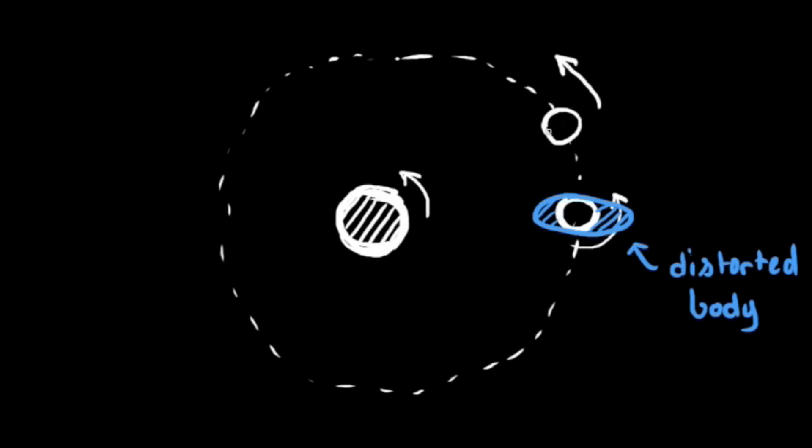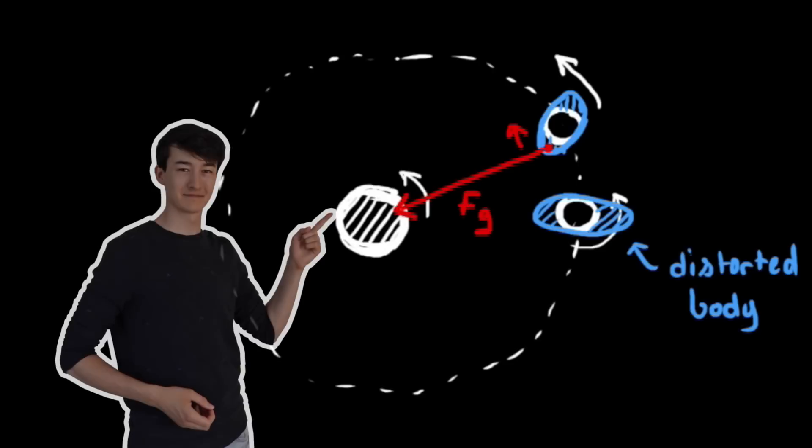And as it orbits the planet, it turns about its axis. And as it does, this distortion, or bulge, moves on. And then the planet will pull on this bulge, pulling it in the opposite direction of the spin, which slows its spin down.